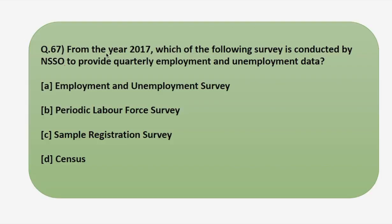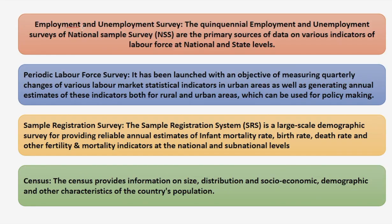Moving on to the next question: from the year 2017, which of the following surveys is conducted by NSS to provide quarterly employment and unemployment data? Four surveys have been given. Let's discuss them. The Employment and Unemployment Survey is a quinquennial survey — conducted every five years. It is a primary source of data on various indicators of the labor force at national and state levels, used for planning, policy formulation, and decision support. It started in 1973.